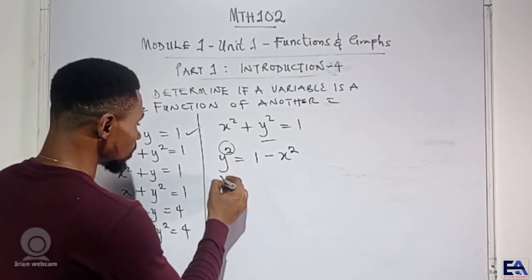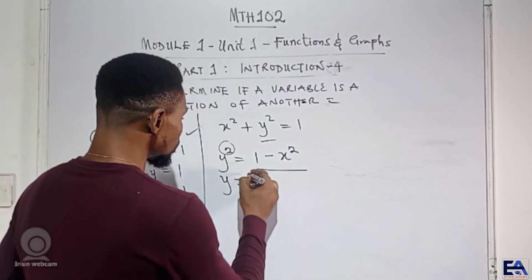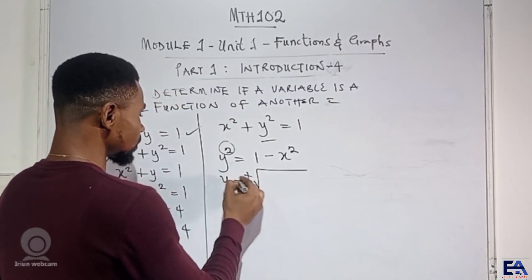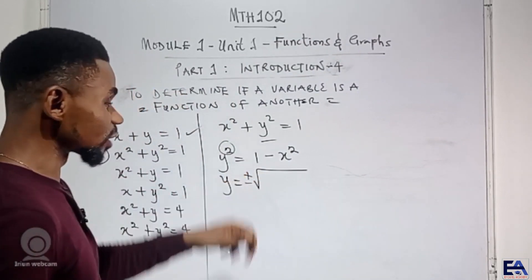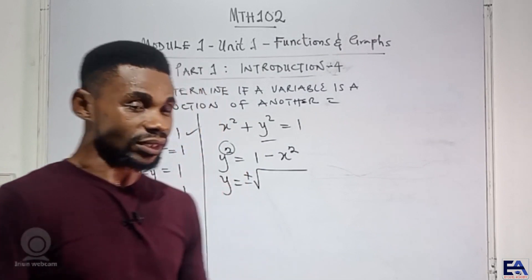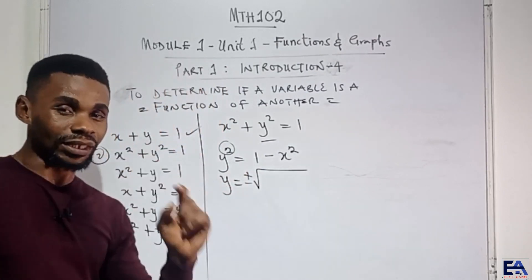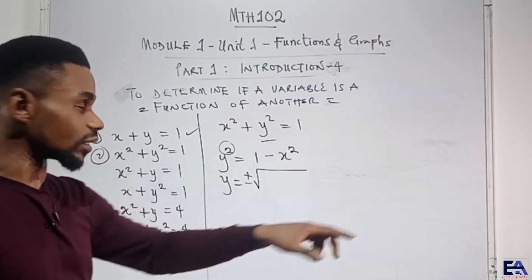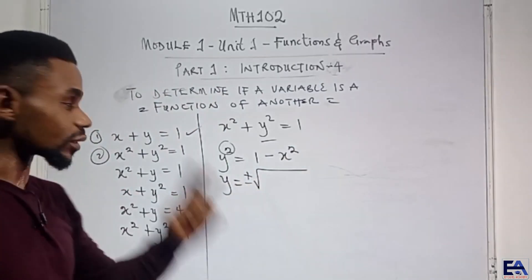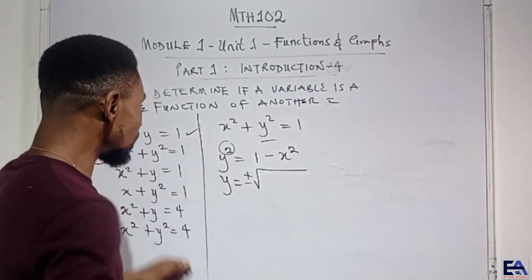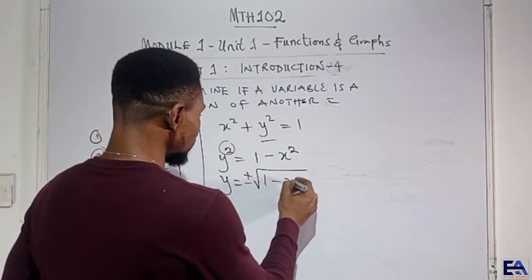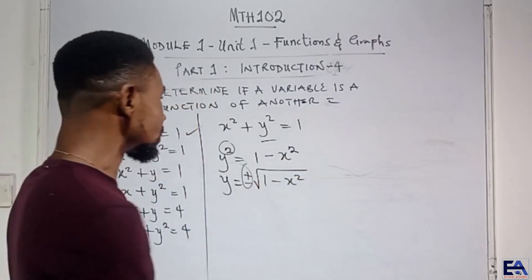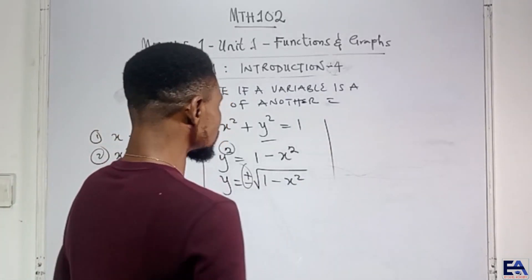So we have y is equal to plus or minus the square root of 1 minus x squared. In mathematics we always put plus or minus because there are two possible answers. Let me just briefly explain why we have this plus or minus and why there are two possible results.